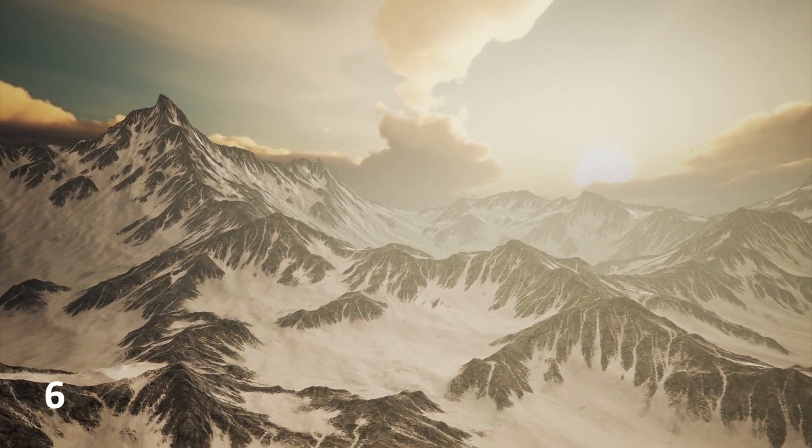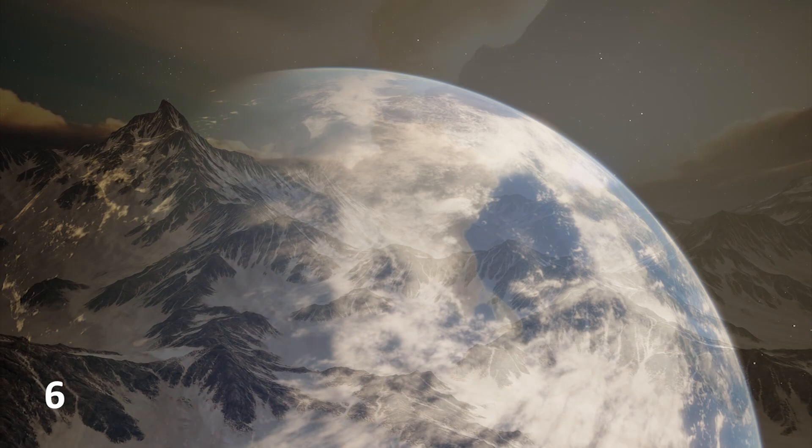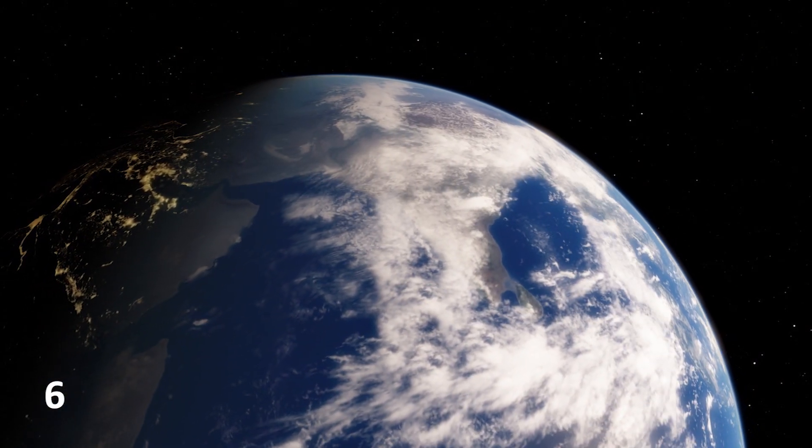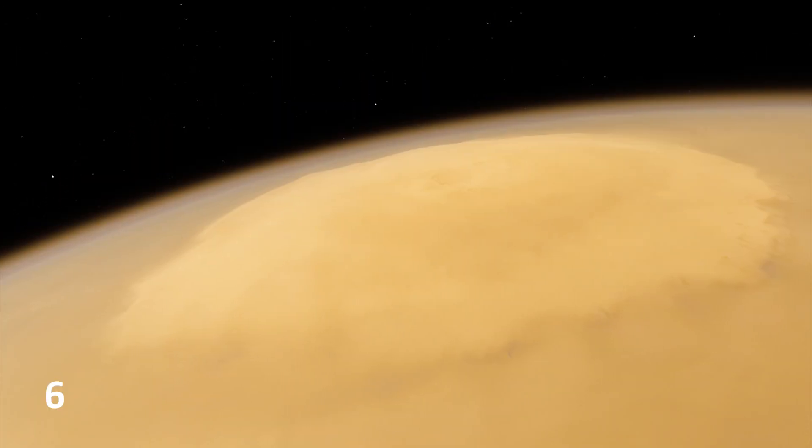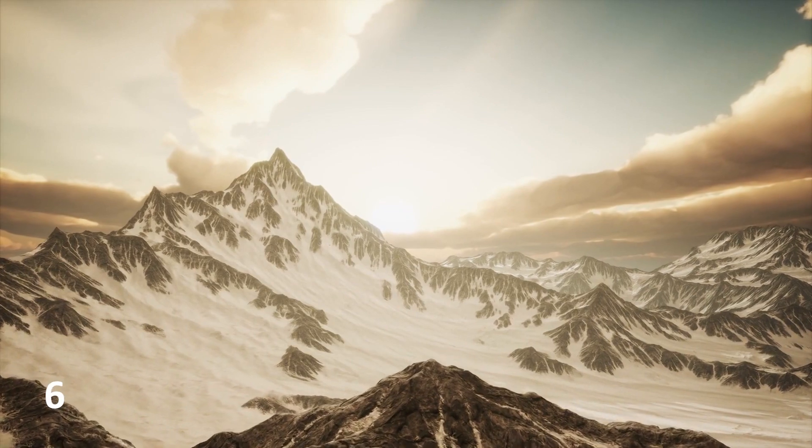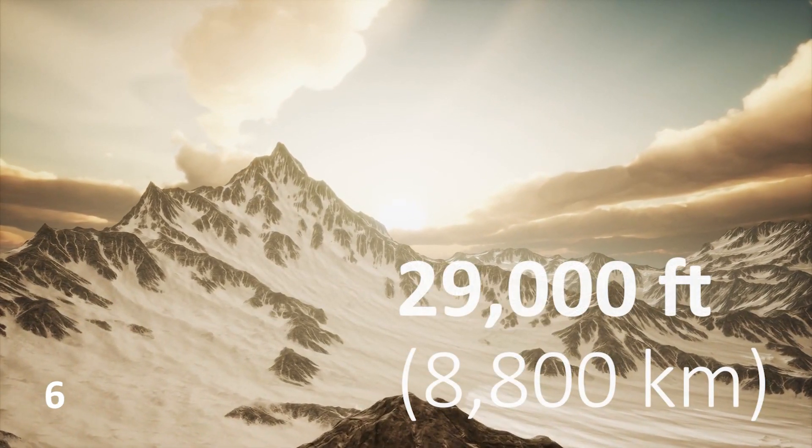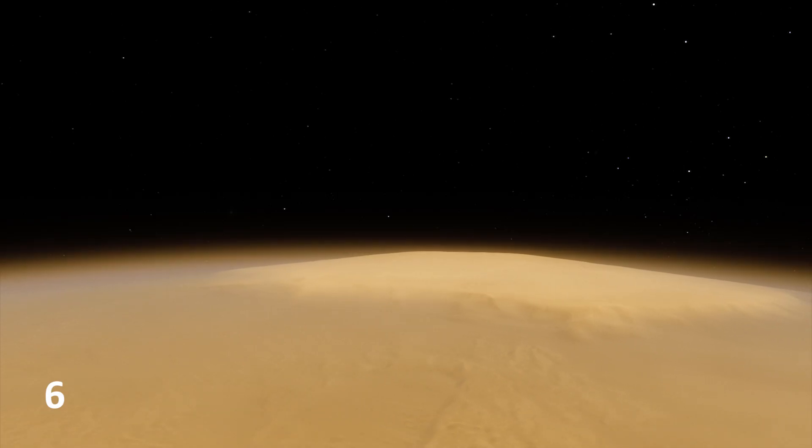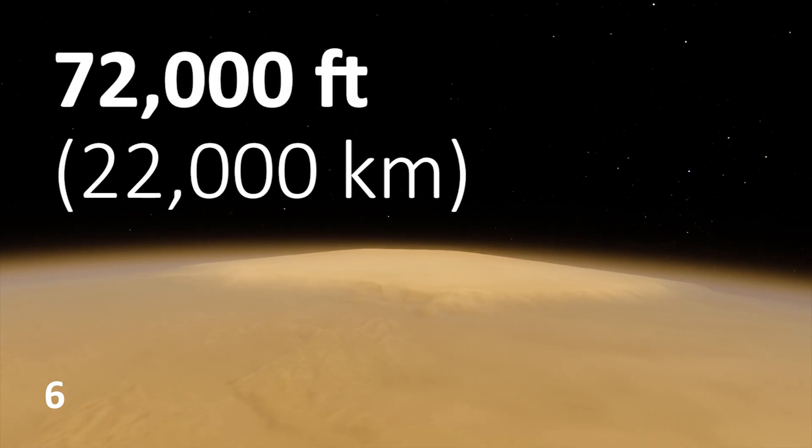Mount Everest is the tallest mountain on Earth, but it hardly comes close to the tallest mountain in the solar system. I'm talking about Olympus Mons on Mars. While Mount Everest peaks at about 29,000 feet, Olympus Mons has a height of about 72,000 feet.